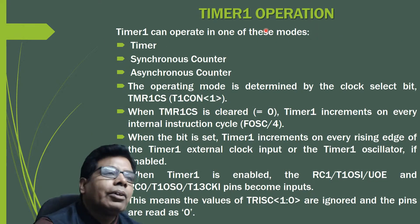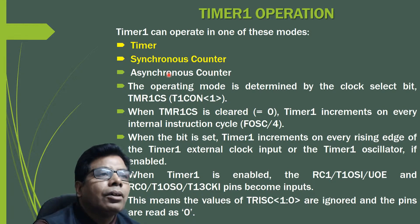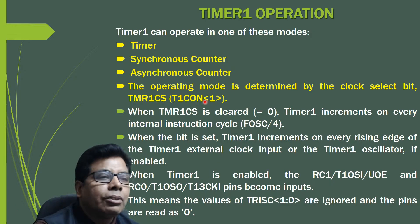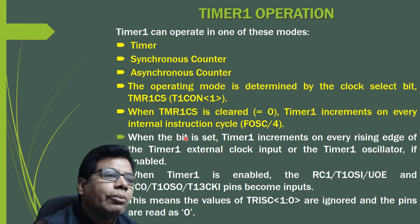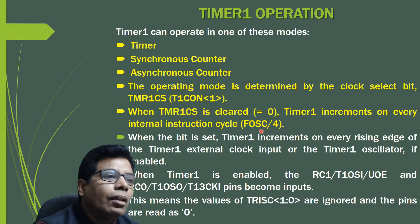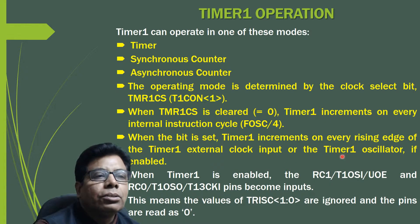Timer 1 can operate in one of these modes: as a timer, as a synchronous counter, or as an asynchronous counter. The operating mode is determined by the clock select bit TMR1CS. When TMR1CS is cleared, the timer increments on every internal instruction cycle at FOSC/4. When TMR1CS is set, Timer 1 increments on every rising edge of the Timer 1 external clock input or the Timer 1 oscillator.